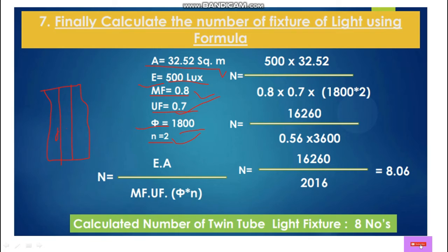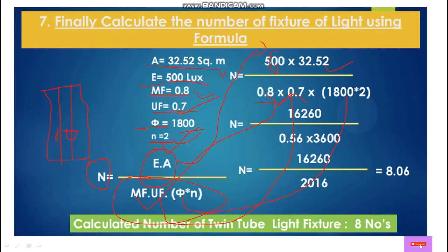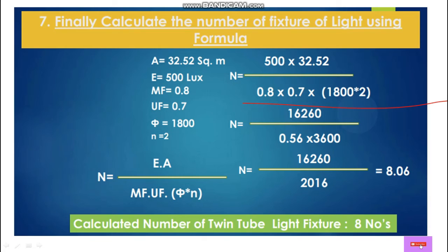Small n equals 2 because in one set of tube lights we are using 2 tube lights. Now placing all values into the formula: N = (500 × 32.52) / (0.8 × 0.7 × 1800 × 2). The numerator gives 16,260 and the denominator gives 2,016. Dividing 16,260 by 2,016 gives 8.06.